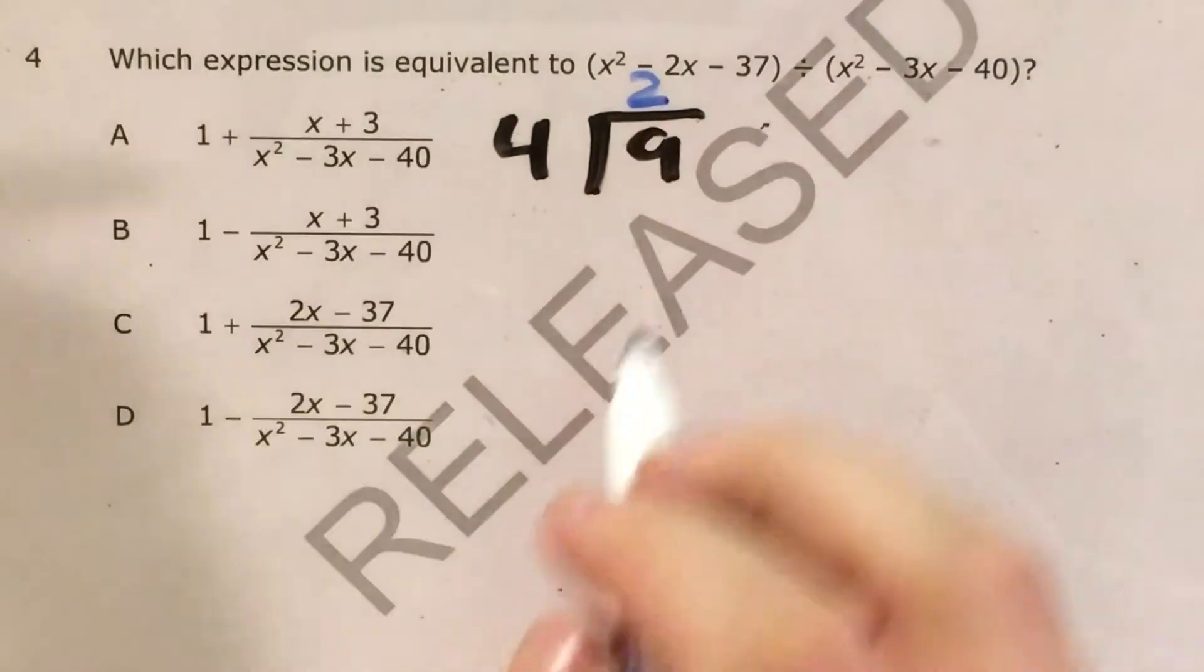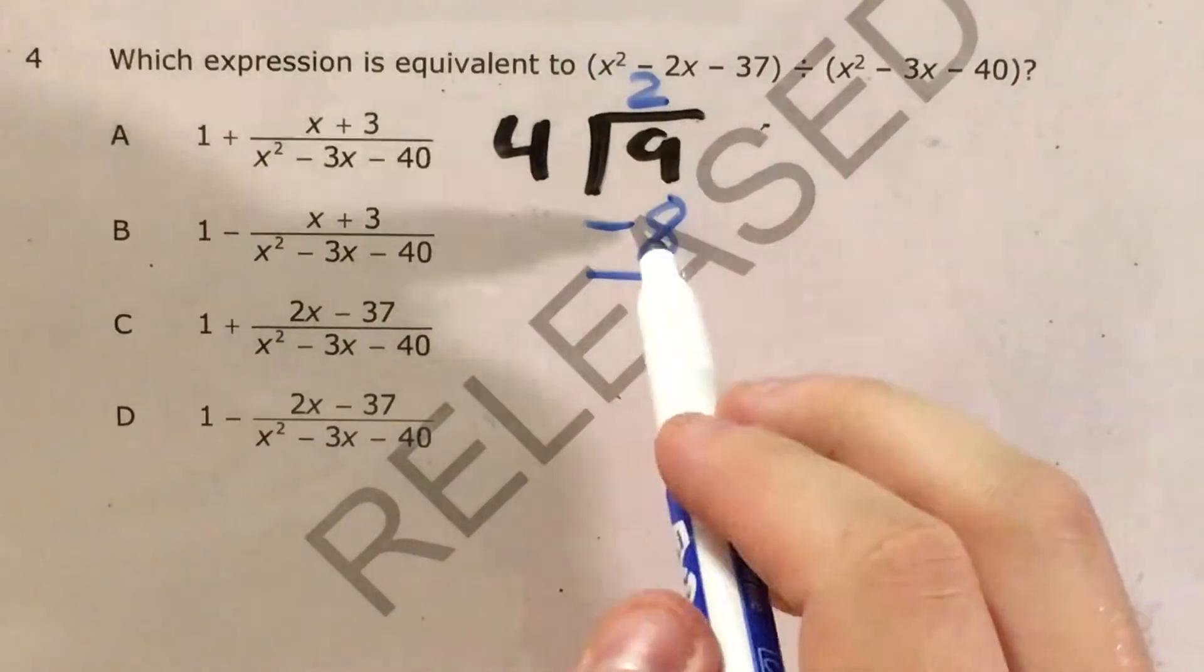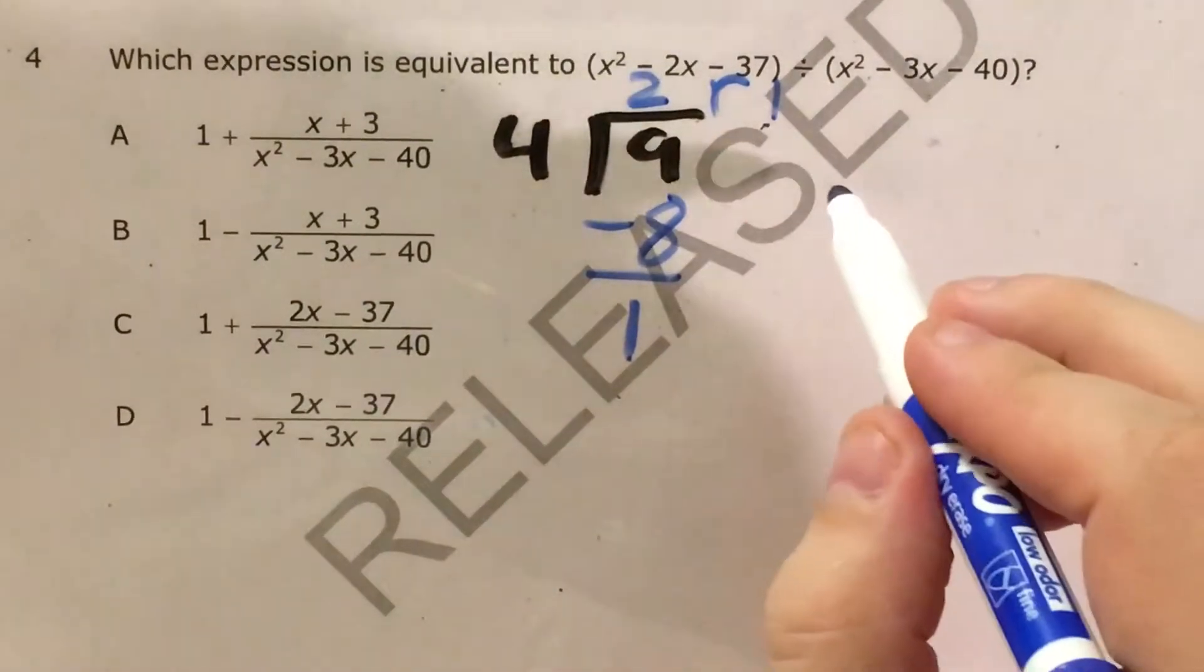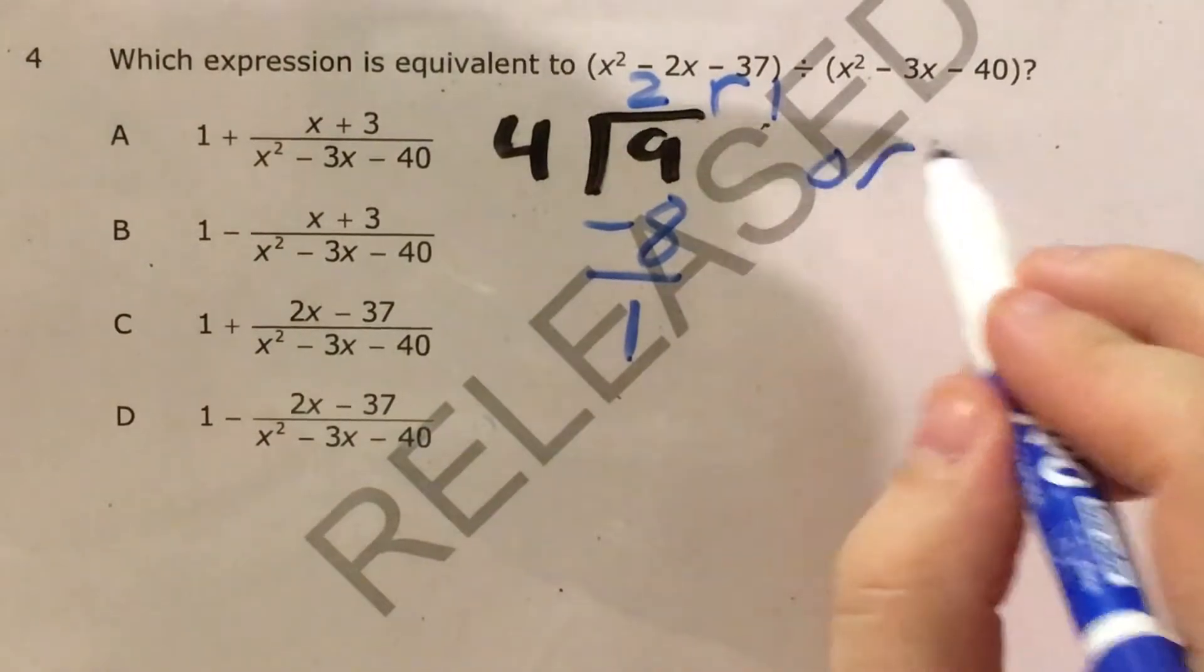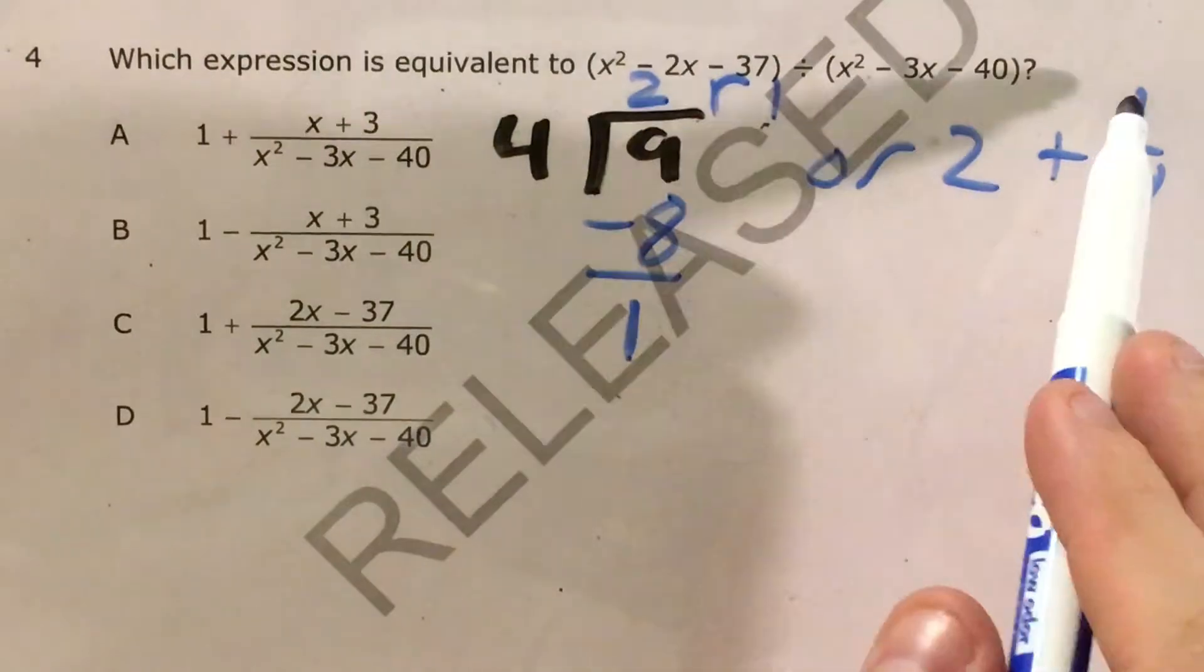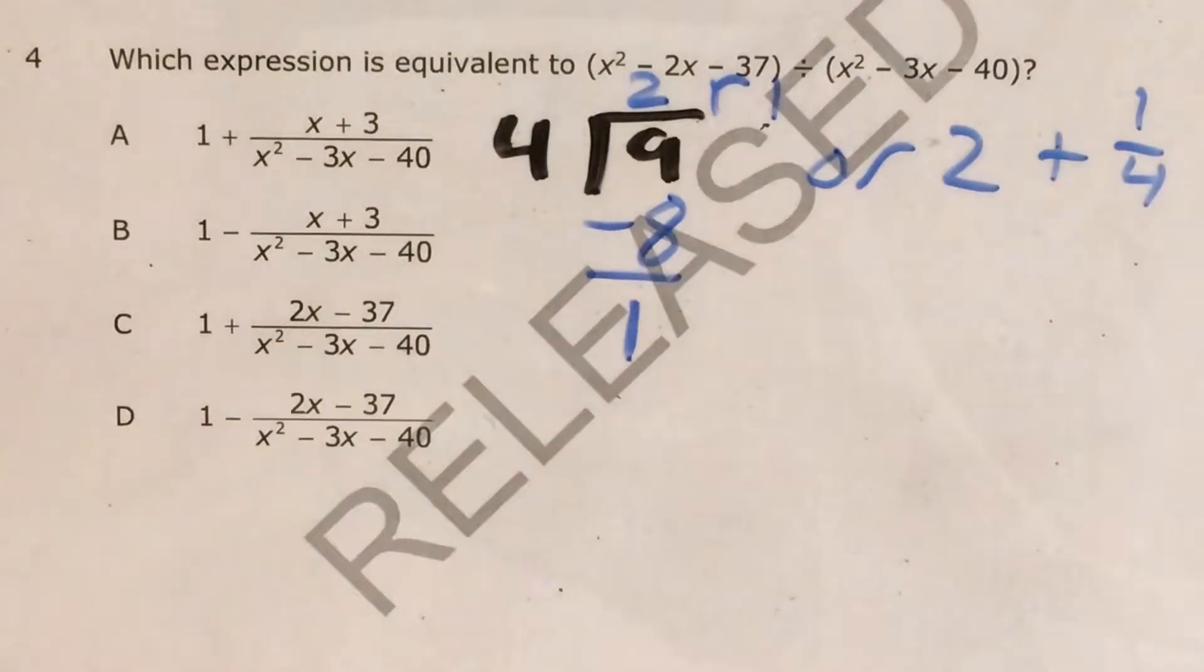That's two times. And I'm going to subtract under here four times two, which is eight, and that leaves me one. So I would say either two remainder one or two and one fourth. The one fourth comes from my remainder divided by my divisor.